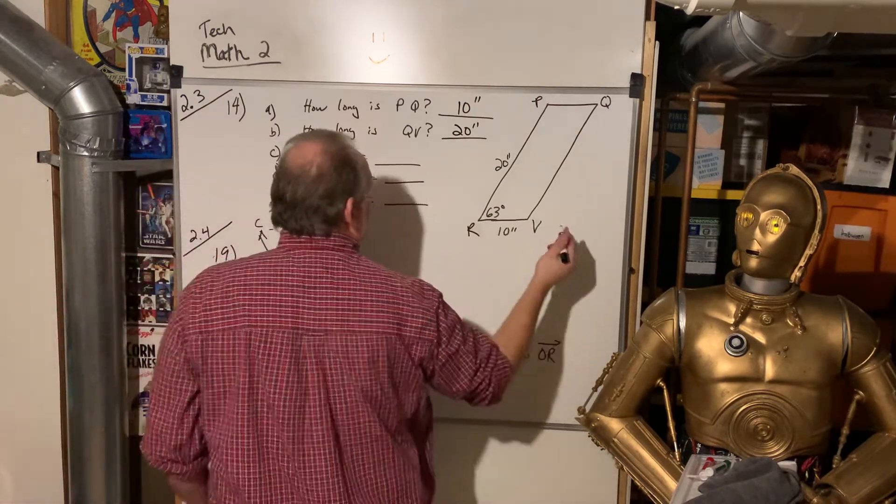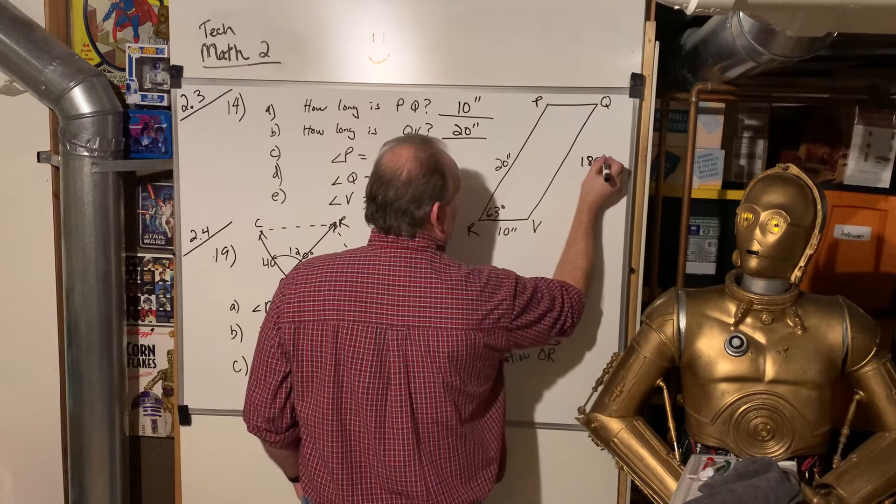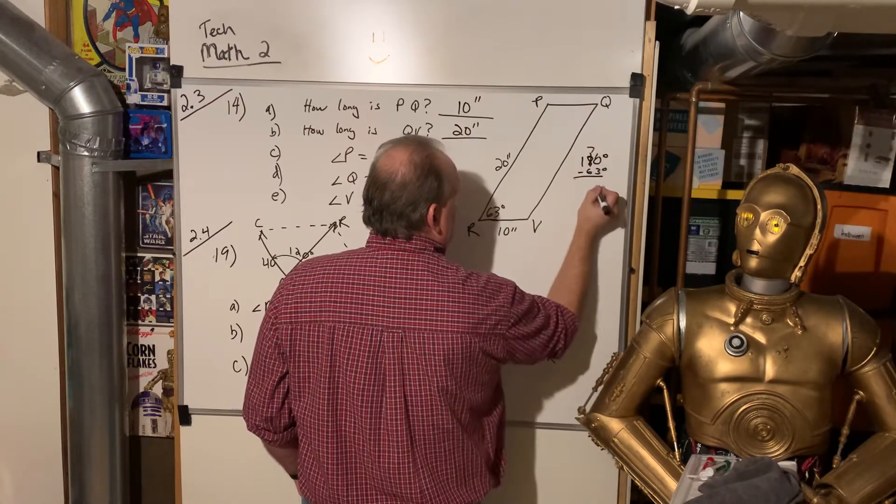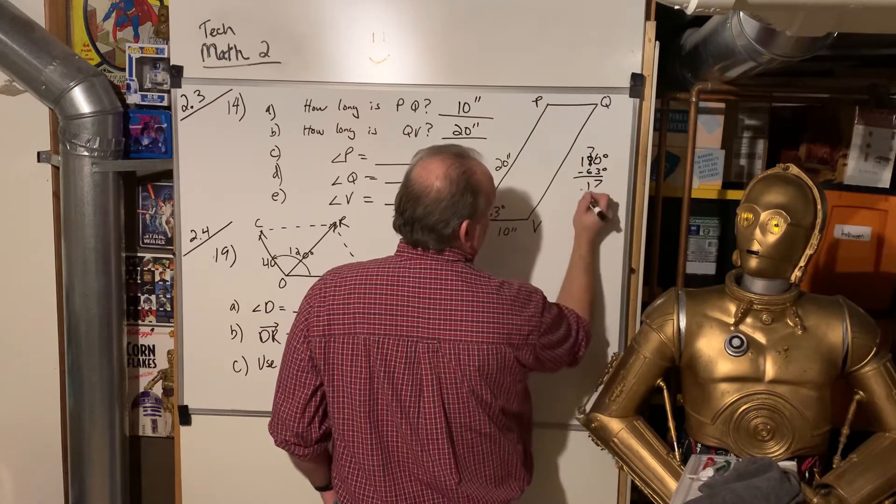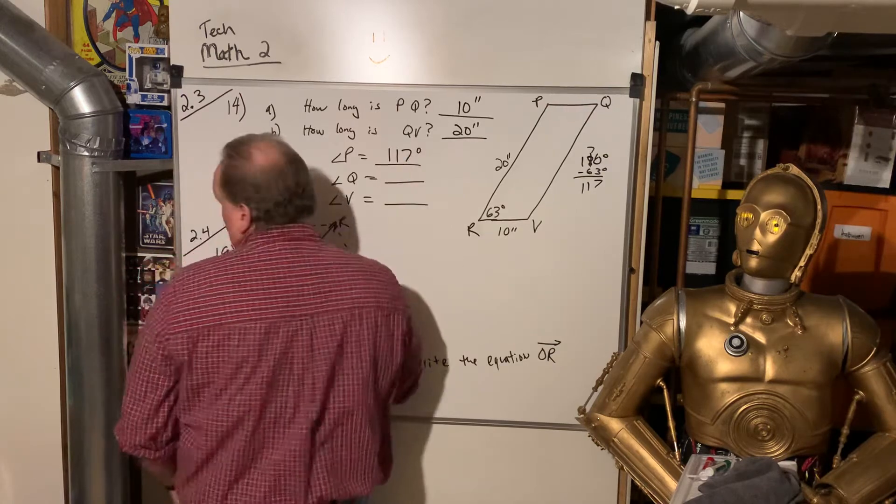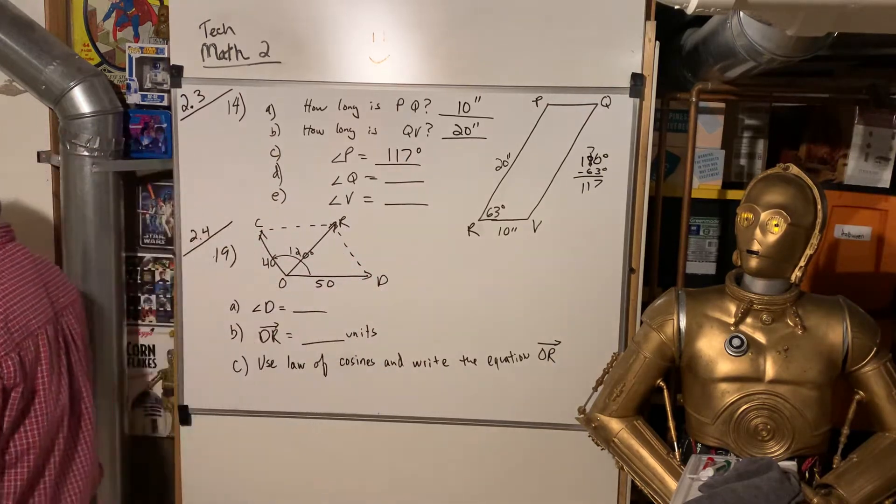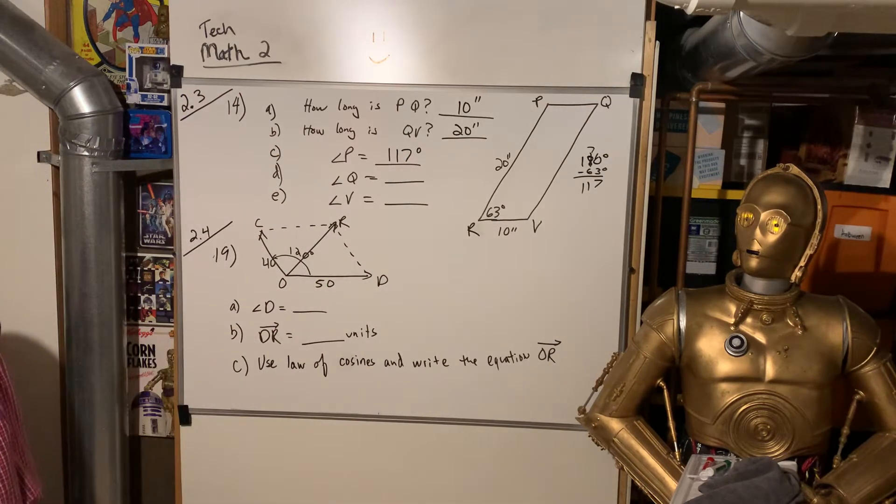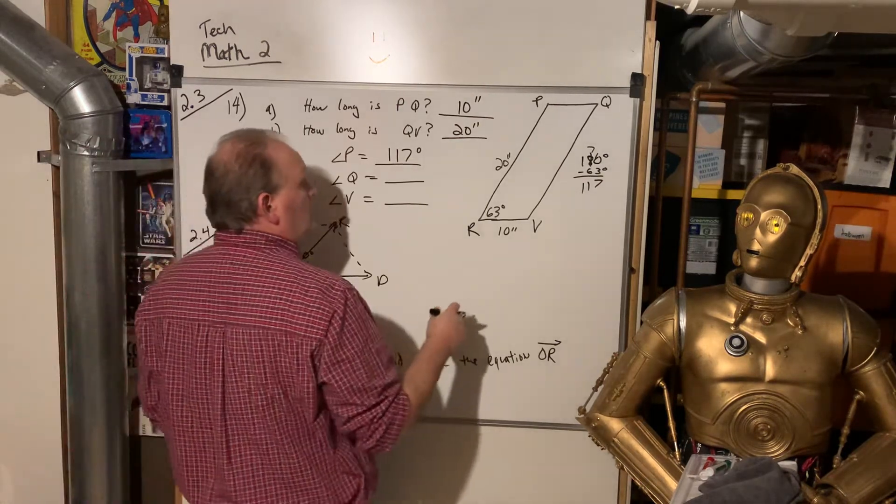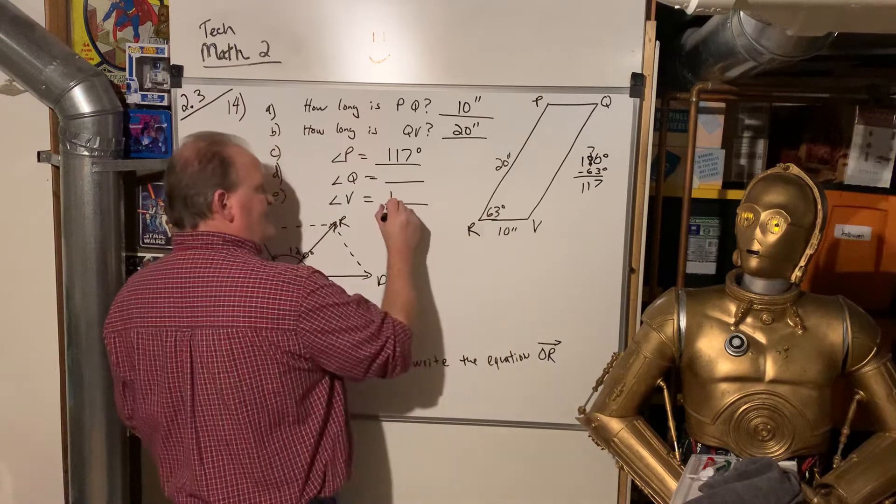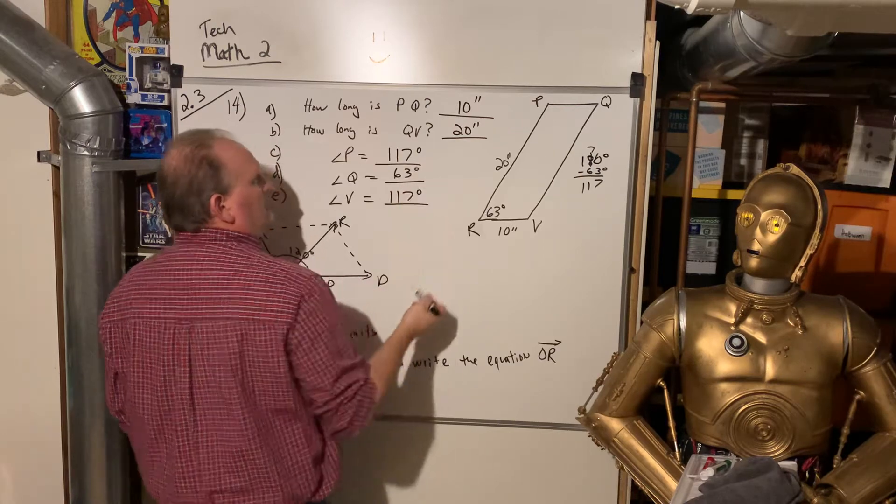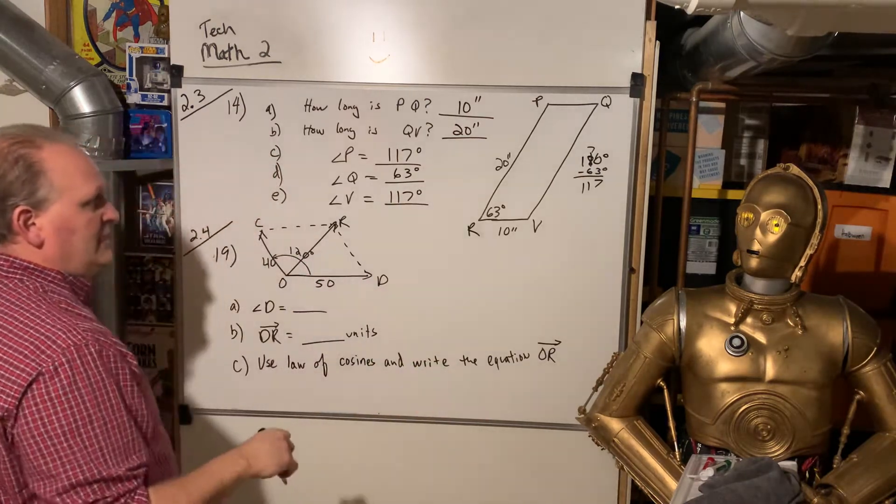Angle P, that's going to be 180 degrees minus 63 degrees. So what are we looking at there? 117 degrees. And then if that guy is 117 degrees, so is V. And Q is going to be 63 degrees. And there we go. Easy peasy.